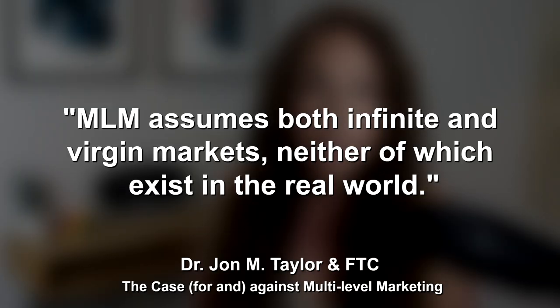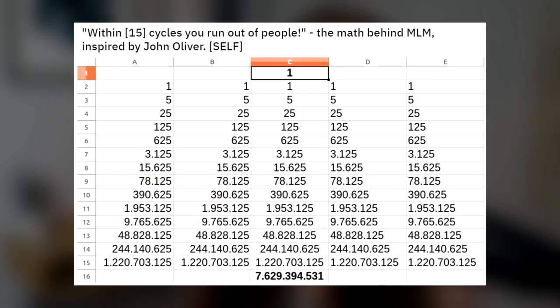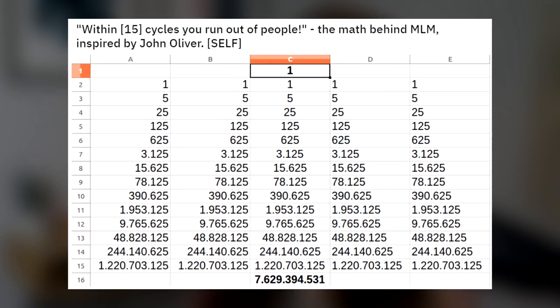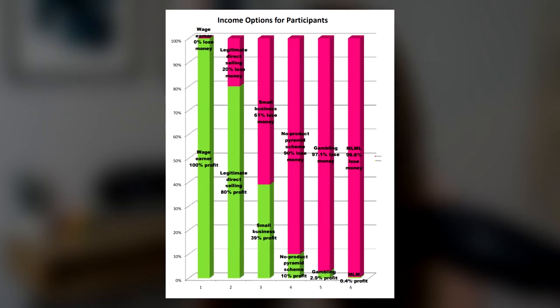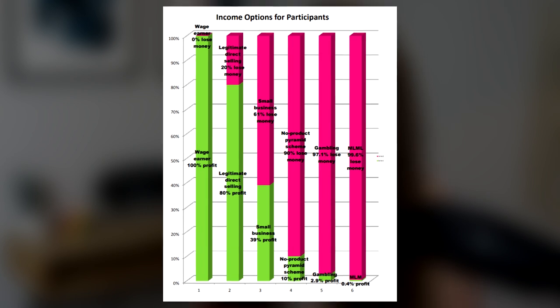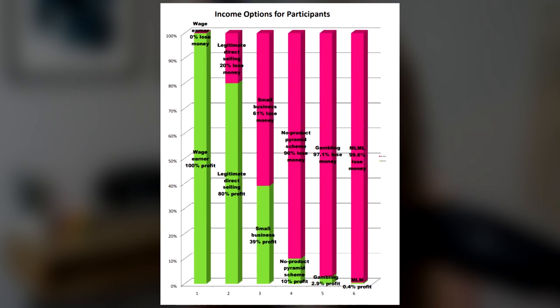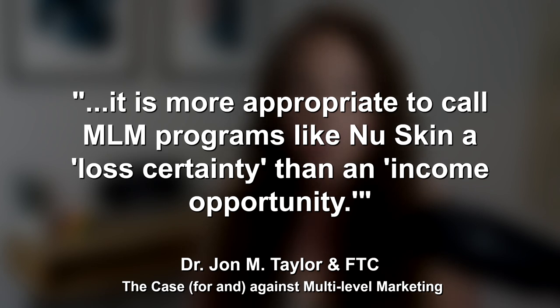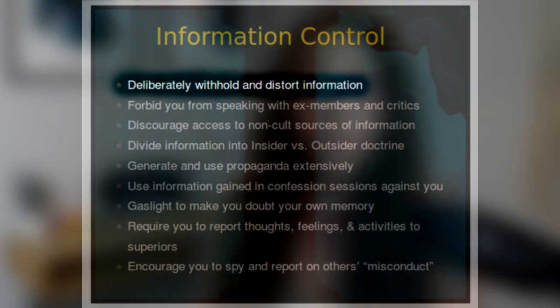The MLM business structure is based on the assumption of an infinite market and a virgin market, neither of which actually exist. If you truly were to recruit three friends who then recruit three friends who then recruit three friends, you would exceed the entire population of the world in just 15 levels of downline. According to the Federal Trade Commission, 99.7% of those involved in MLMs never turn a profit or actually lose money. MLMs should be thought of as a loss certainty rather than an income opportunity. Raniere centered his cult on the MLM business structure and charged thousands of dollars per training course in NXIVM.